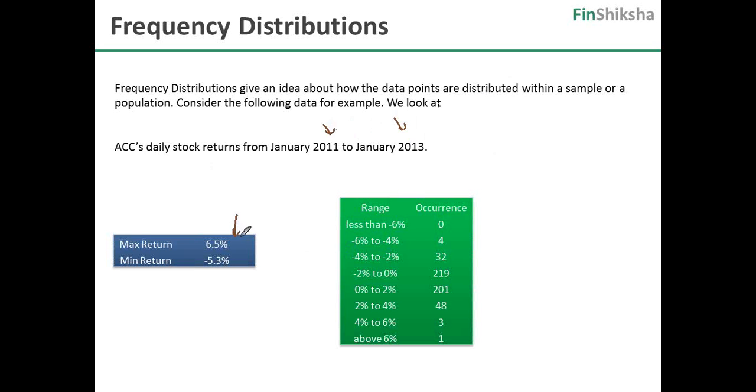The max return was 6.5 percent. The min return was minus 5.3 percent. And effectively we have taken a range of occurrences. So we have taken ranges: less than minus six percent, minus six to minus four, minus four to minus two, minus two to zero, and so forth. And you see the occurrences.